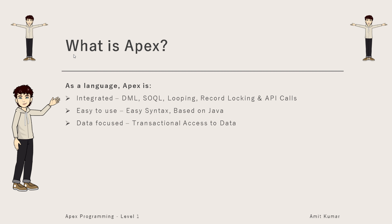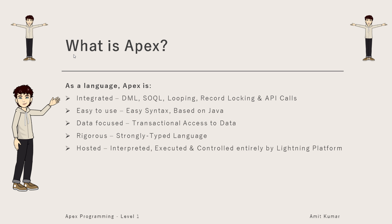Apex is data-focused, meaning it provides transactional access to data — we've already discussed transactions, so data has a transactional, focused approach. It is rigorous, meaning it's a strongly typed language. It is hosted, as it runs on the Lightning Platform — it is interpreted, executed, and controlled entirely on the Lightning Platform itself.